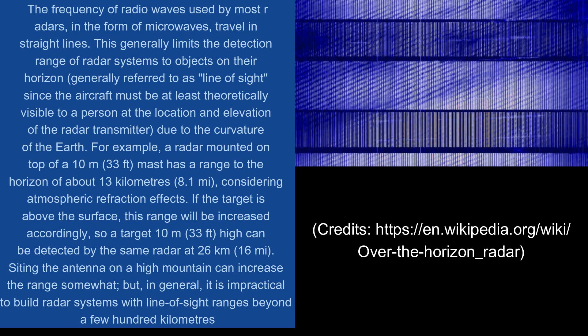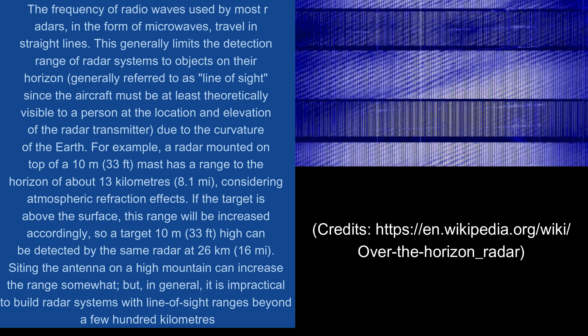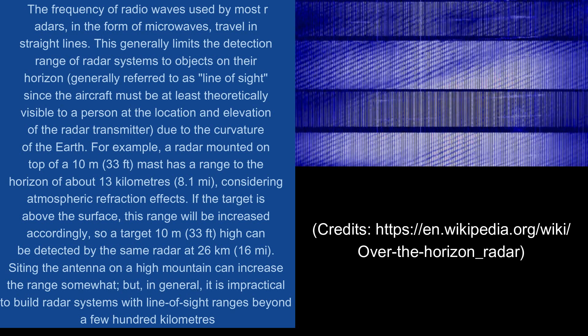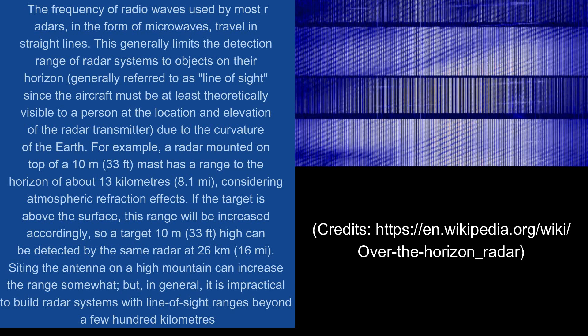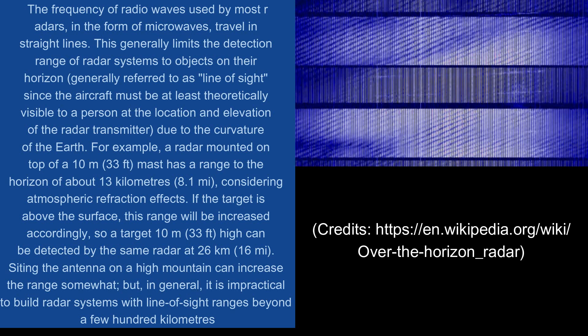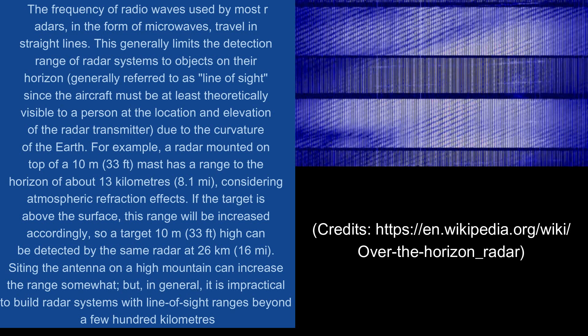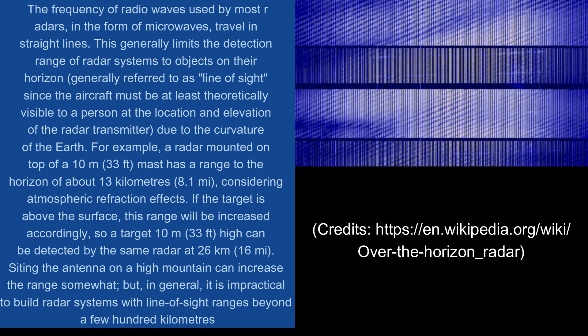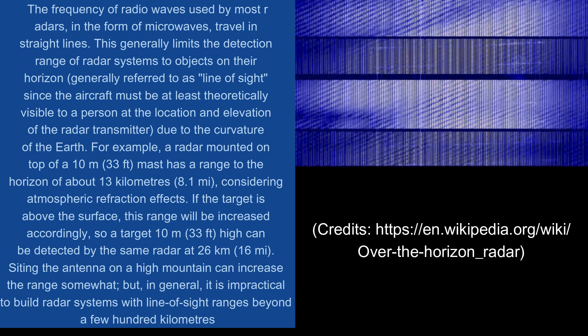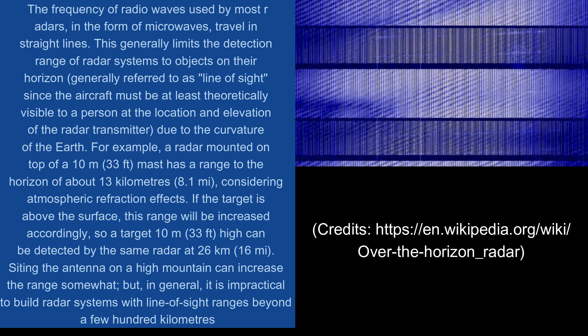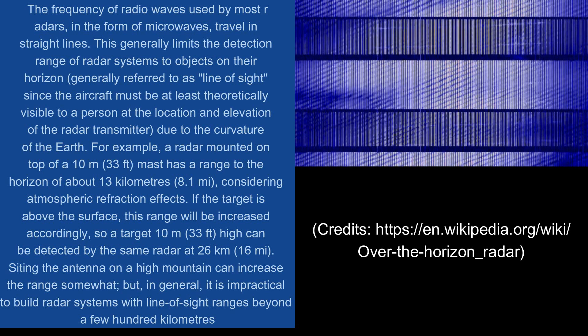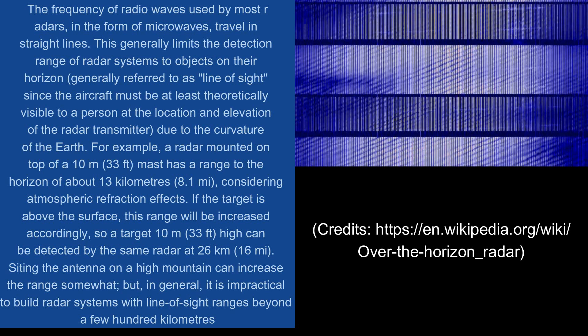For example, a radar mounted on top of a 10 meters (33 feet) mast has a range to the horizon of about 13 kilometers (8.1 miles), considering atmospheric refraction effects. If the target is above the surface, this range will be increased accordingly, so a target 10 meters (33 feet) high can be detected by the same radar at 26 kilometers (16 miles).